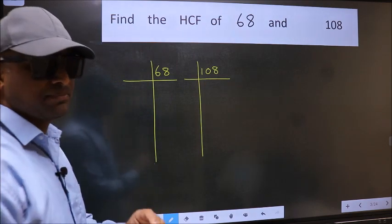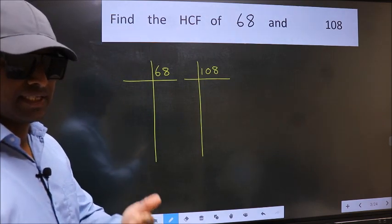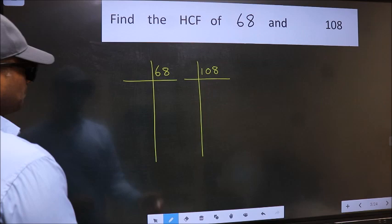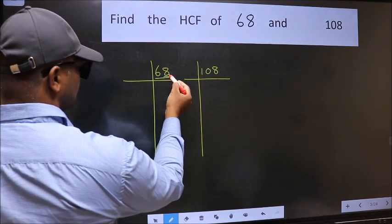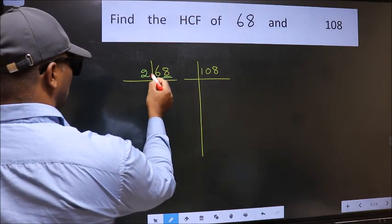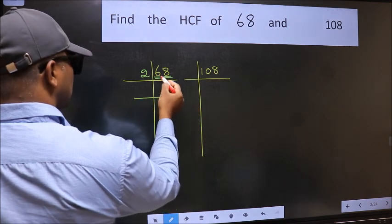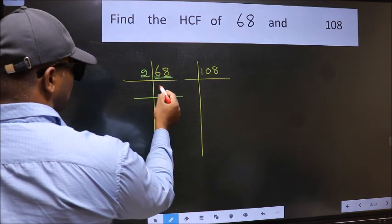This is step 1. Next, in this number, last digit 8 is even, so take 2. First number 6, when do we get 6 in 2 table? 2 times 3 is 6.